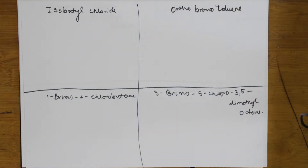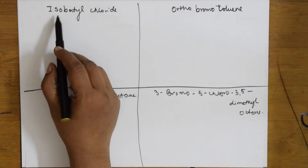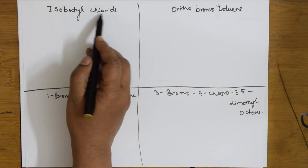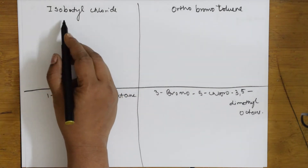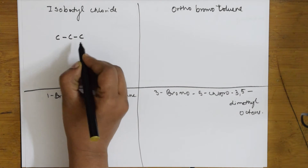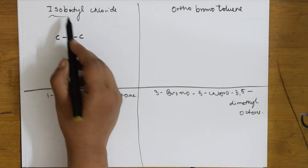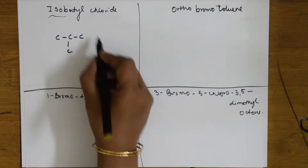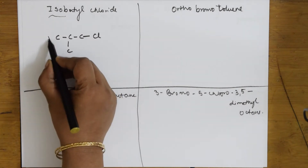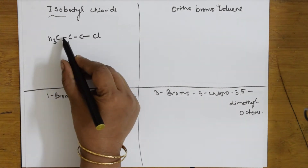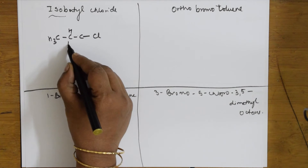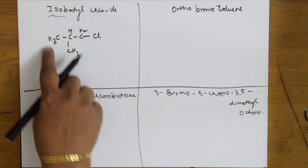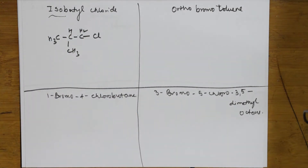In the next example, they have given me isobutyl chloride. The iso group has three carbons — one, two, three — and at the second carbon there is one methyl group. Chloride means Cl at the end carbon. Filling hydrogens: four for the terminal carbon, CH₂ in the middle. This is isobutyl chloride.